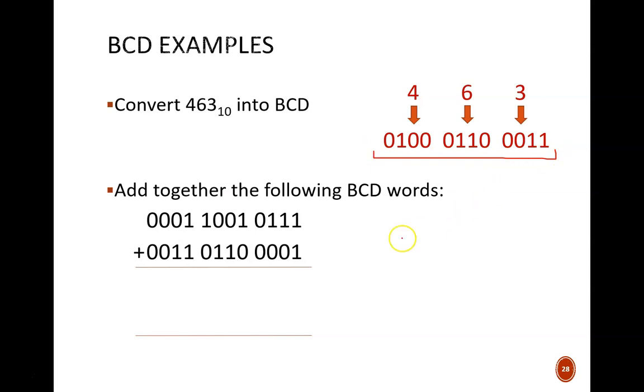As a result, addition in BCD gets a little tricky. Given these three digit numbers, add them together. First, we work through just like normal binary addition. 1 plus 1 equals 1, 0. 1 plus 1 equals 1, 0. And so on from right to left.